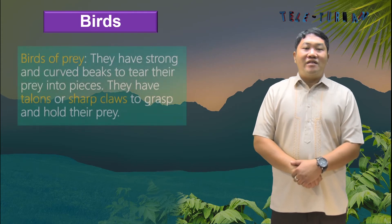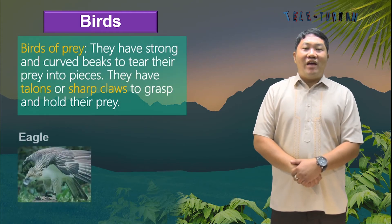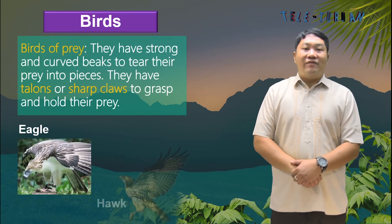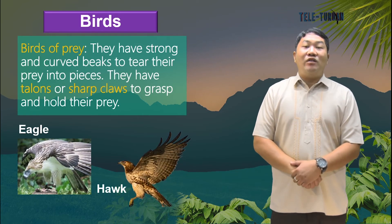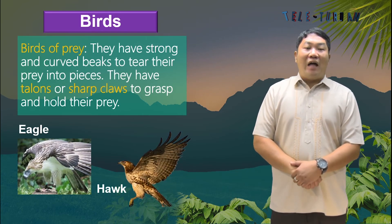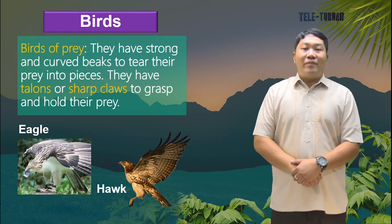Eagles and hawks are birds of prey. They have strong and curved beaks to tear their prey into pieces, and talons or sharp claws to grasp and hold their prey.